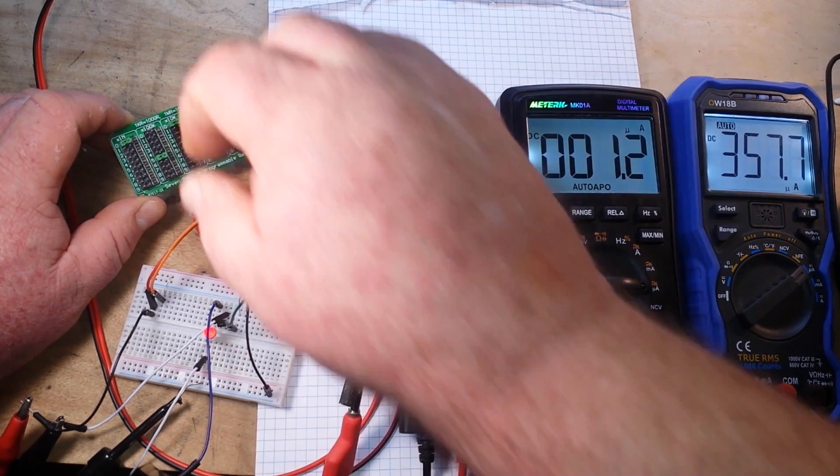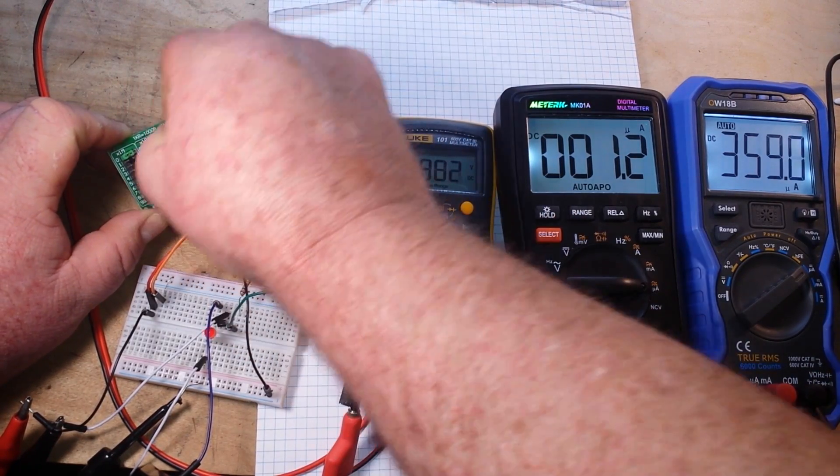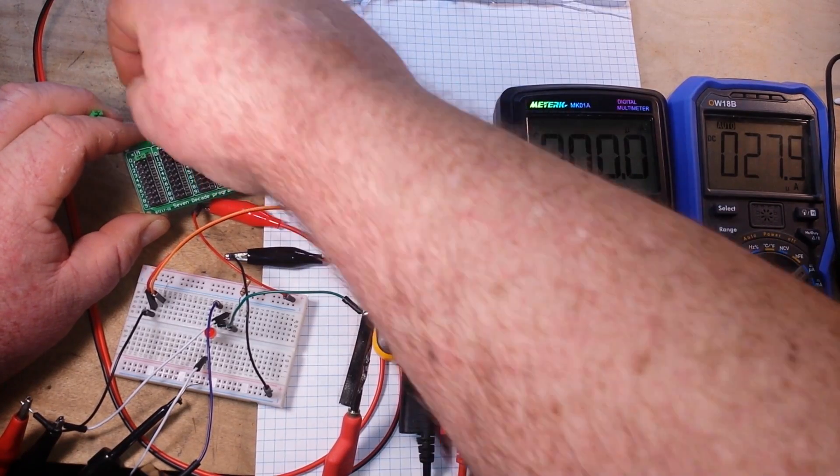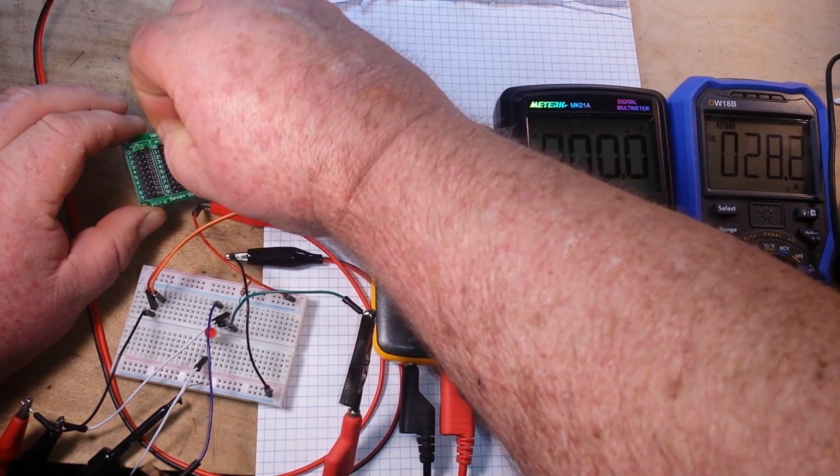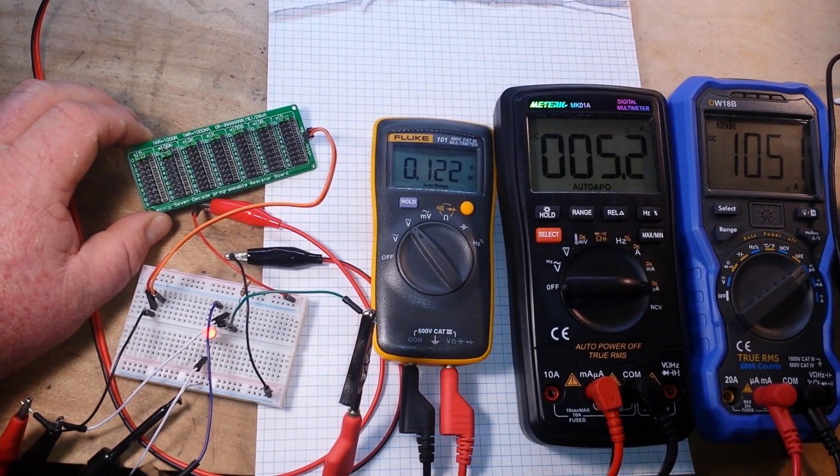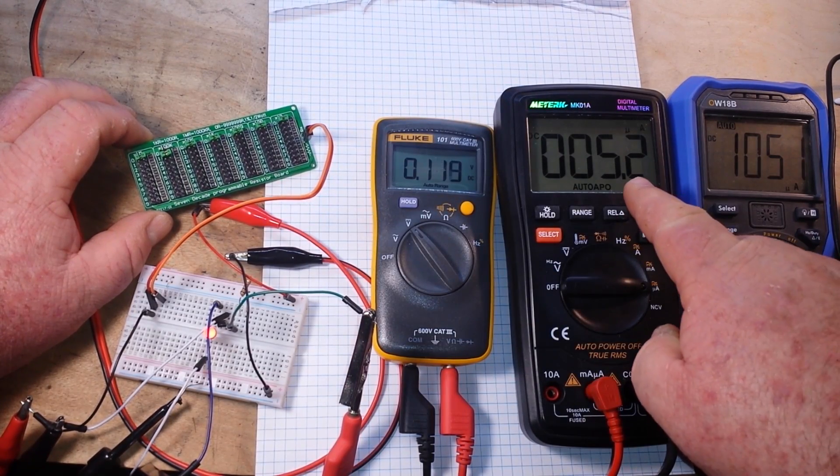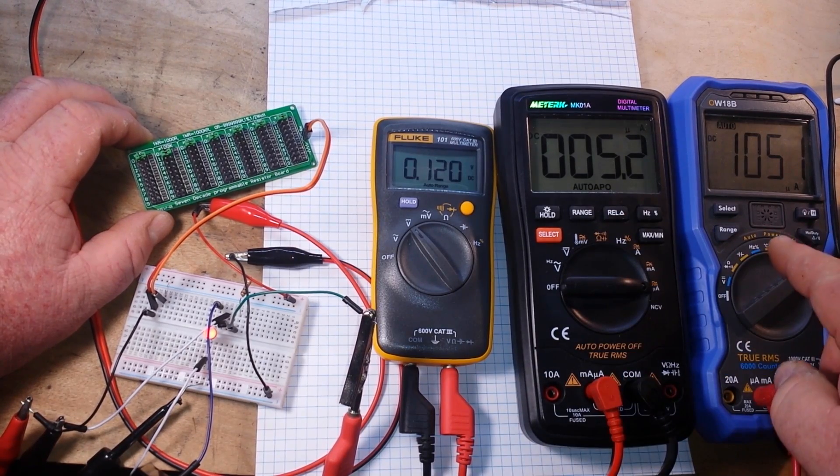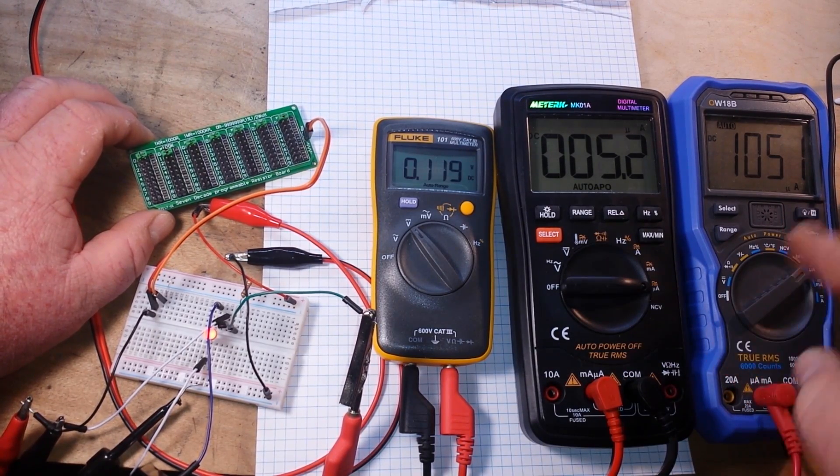Let's take that off. Let's go to 100k. Here now at 100k you can see we're putting in 5.2 microamps and getting out 1051 in our collector current.